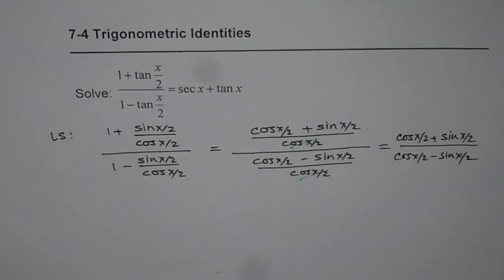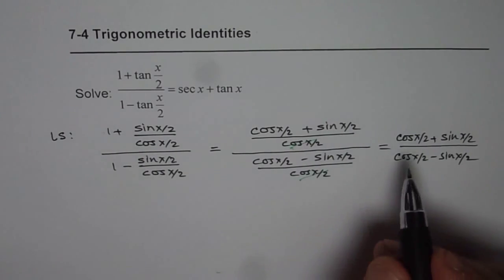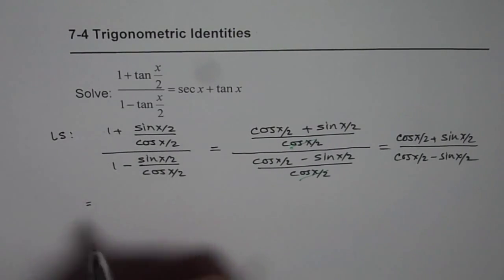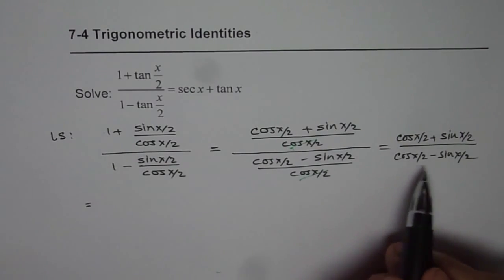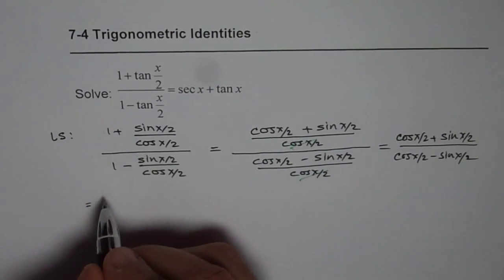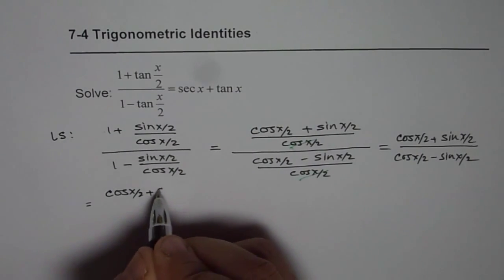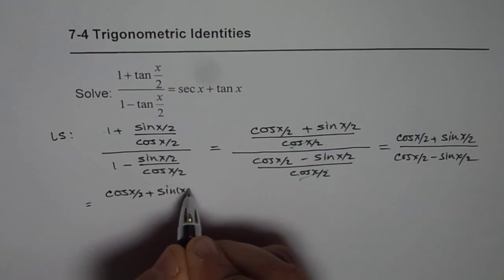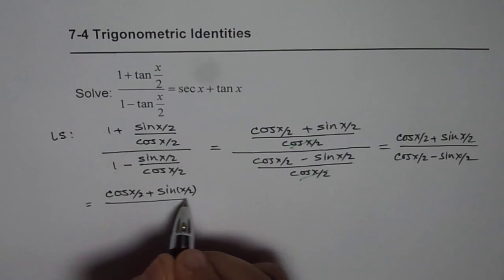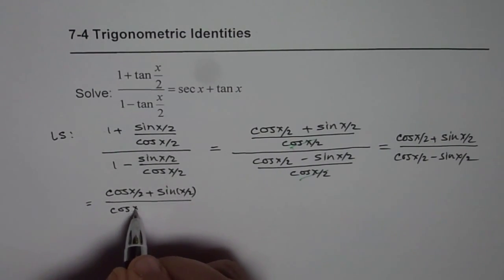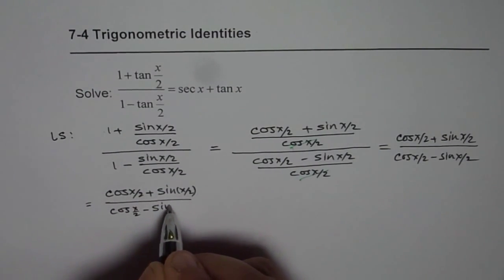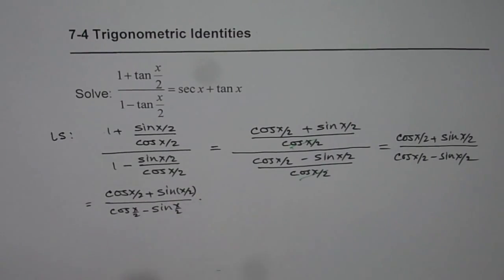Here we are applying our strategy and we are kind of rationalizing it. We have (cos(x/2) + sin(x/2))/(cos(x/2) - sin(x/2)), so we'll rationalize by multiplying by (cos(x/2) + sin(x/2)).